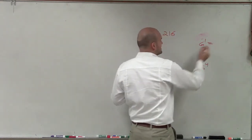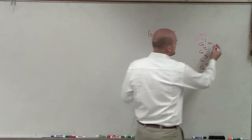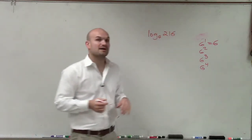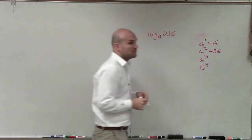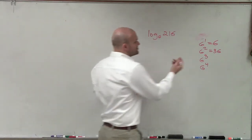6 to the fourth. Well, 6 multiplied by itself one time is obviously 6. 6 multiplied by itself two times is going to be 36. And then 6 multiplied by itself three times is actually 216.